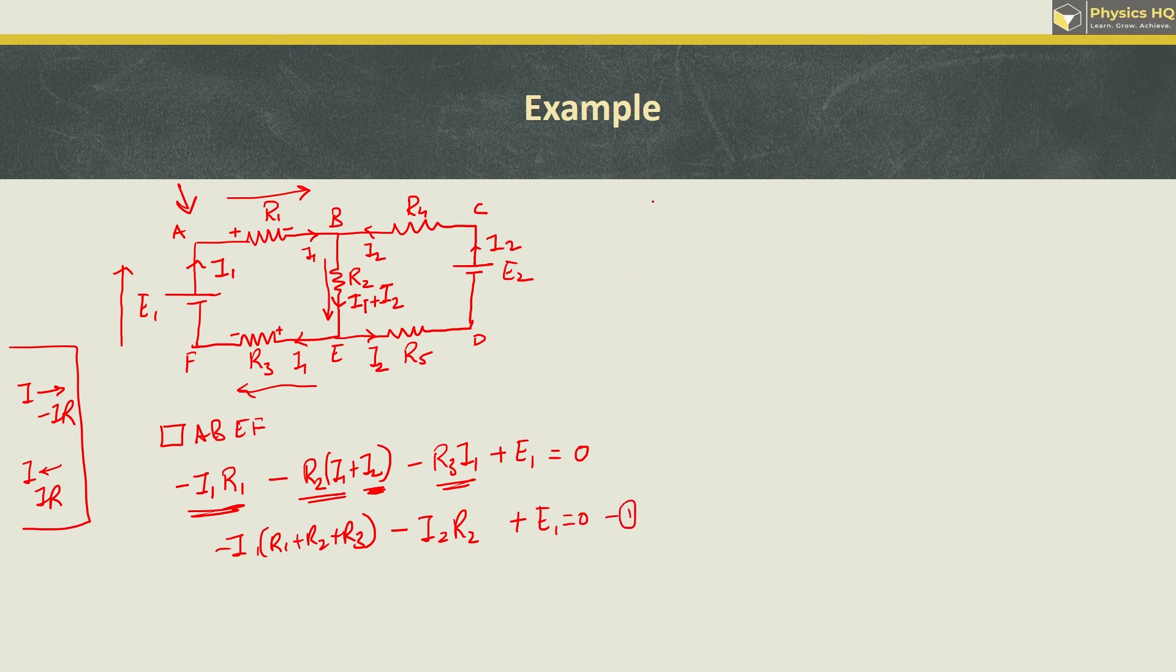Now we trace loop BCDE. While going from B to C, we are going opposite to the current direction, so it's plus IR. The second sign is plus, so we take plus I2 R4. While going from C to D, the battery's second terminal is negative, so we write minus E2.